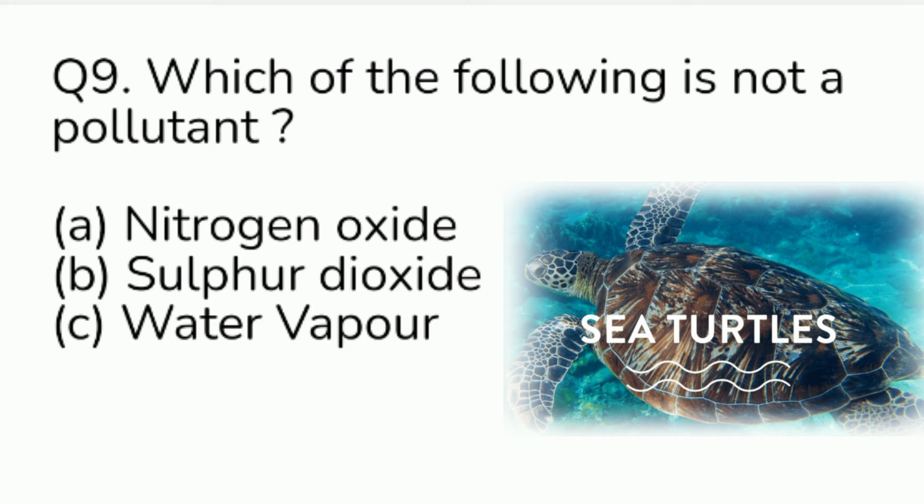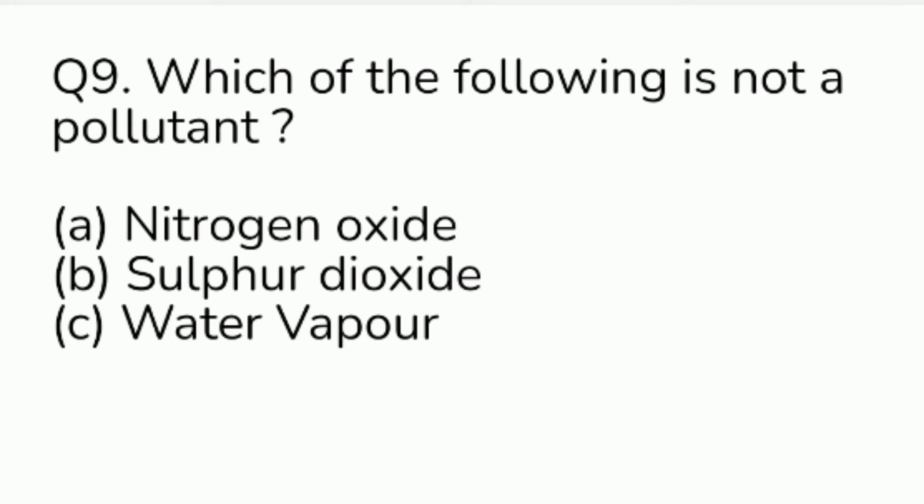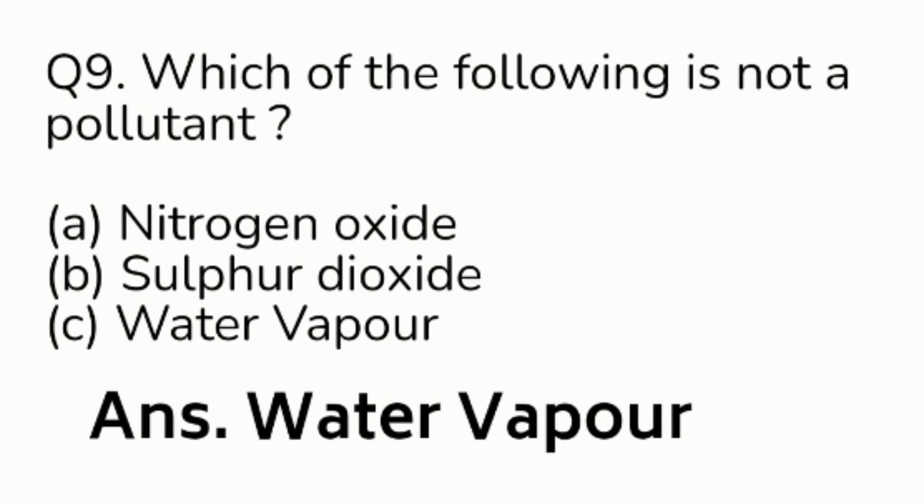Question number 9. Which of the following is not a pollutant? Option A: nitrogen oxide. Option B: sulphur dioxide. Option C: water vapour. Answer is Option C, water vapour.